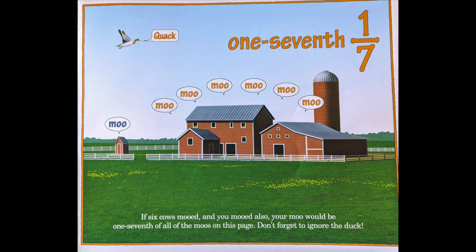One seventh. If six cows mooed and you mooed also, your moo would be one seventh of all of the moos on this page. Don't forget to ignore the duck.